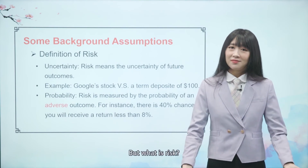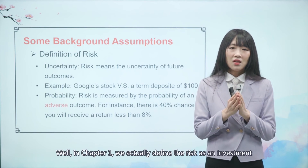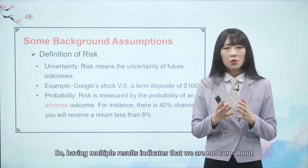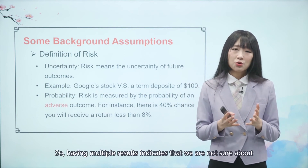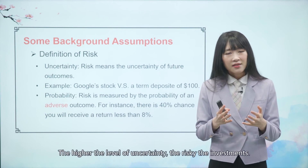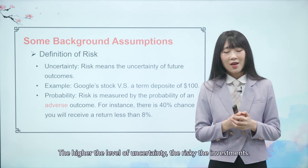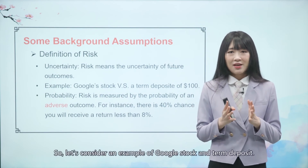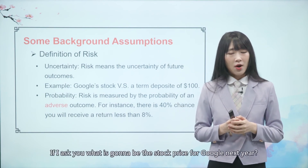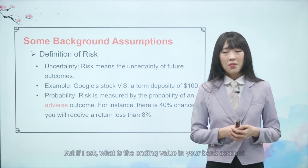What is risk? In Chapter 1, we defined risk as an investment being able to have multiple outcomes in the future. Having multiple results indicates that we are not sure what's going to happen — that means uncertainty. The higher the level of uncertainty, the riskier the investment. For example, with Google stock, if I ask what the stock price will be next year, we wouldn't know. But if I ask what the ending value of a $100 term deposit will be, you would know exactly, because the interest rate is fixed.